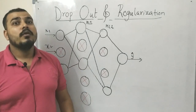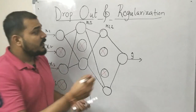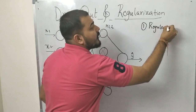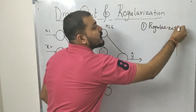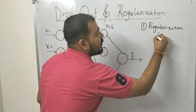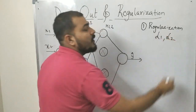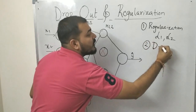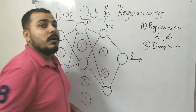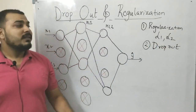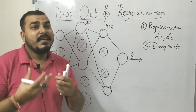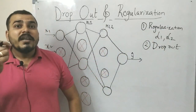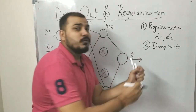There are two basic ways to solve an overfitting problem. The first is regularization — we have discussed regularization in machine learning, and there are two types: L1 and L2. In today's session, we will be discussing the second type, which is called dropout. By implementing dropout, this will help us implement a technique similar to regularization.